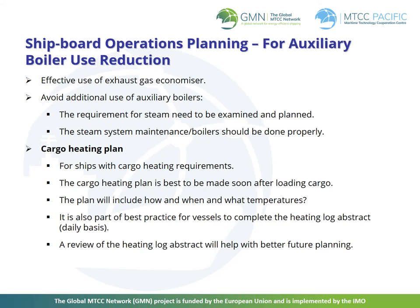Measures to achieve the reduction of auxiliary boiler use include: the effective use of the exhaust gas economiser; examining and planning requirements for steam; proper maintenance of the steam system and boiler; including a cargo heating plan for ships with cargo heating requirements — the cargo heating plan is best made soon after loading the cargo, including details on how, when and what temperature to use. It is also best practice for vessels to complete the heating log abstract daily, as a review of the heating log abstract will help with better future planning.